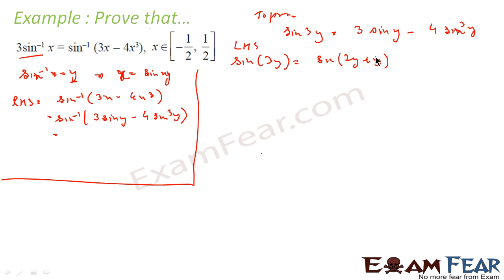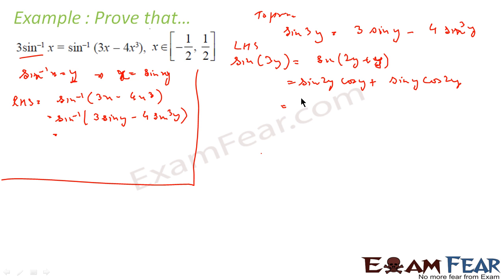Using the formula sin(a + b) = sin a cos b + cos a sin b, sin 3y = sin(2y + y) = sin 2y cos y + cos 2y sin y. Now sin 2y = 2 sin y cos y, so this becomes 2 sin y cos y · cos y plus cos 2y · sin y.